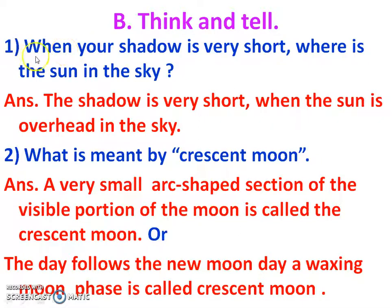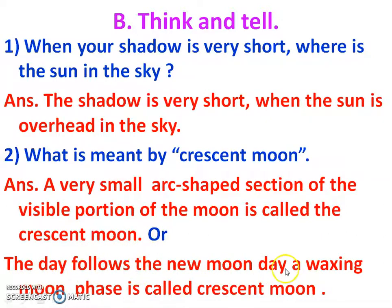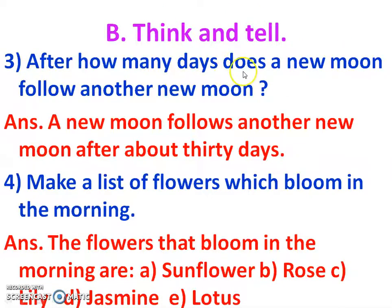Now we will solve the exercise. Question B: Think and Tell. Question 1: When your shadow is very short, where is the sun in the sky? Answer: The shadow is very short when the sun is overhead in the sky. Question 2: What is meant by crescent moon? Answer: A very small arc-shaped section of the visible portion of the moon is called crescent moon, or the waxing moon phase that follows the new moon day is called crescent moon. Question 3: After how many days does a new moon follow another new moon? Answer: A new moon follows another new moon after about 30 days. Question 4: Make a list of flowers which bloom in the morning. Answer: The flowers that bloom in the morning are sunflower, rose, lily, jasmine, lotus, etc.